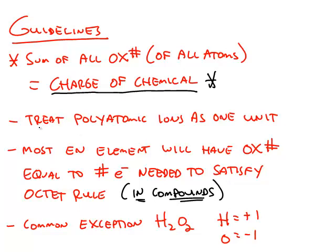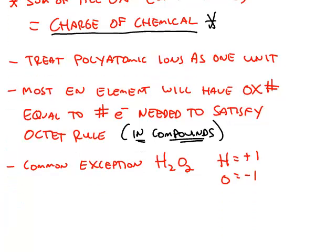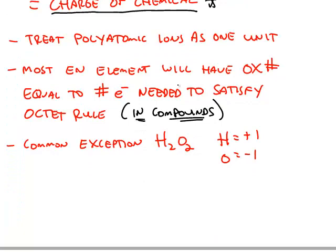A second guideline is to treat polyatomic ions as one unit, because that will help you figure out some other elements' oxidation numbers. The most electronegative element will have the oxidation number equal to however many electrons it needs to satisfy the octet rule, and this will be a negative number.